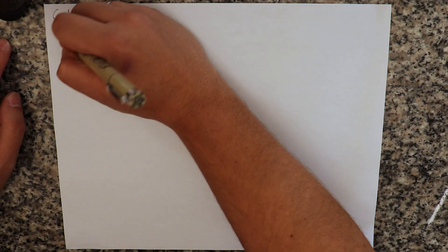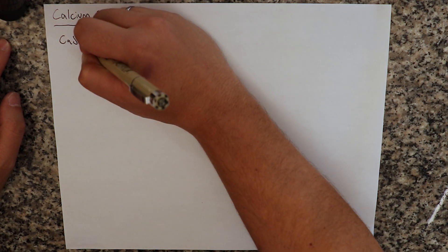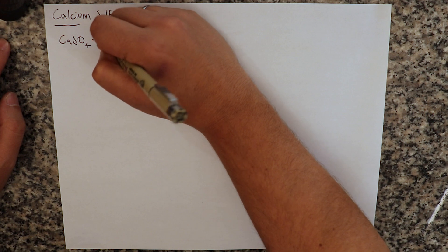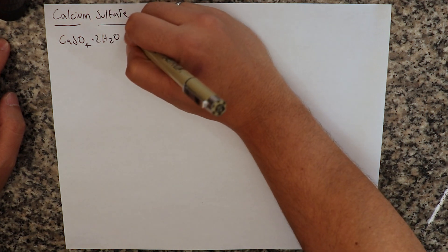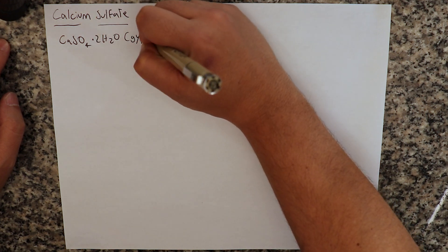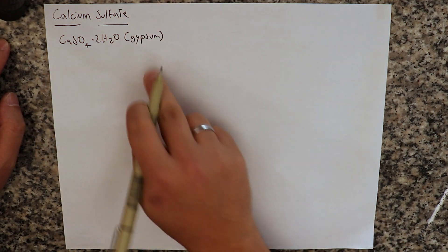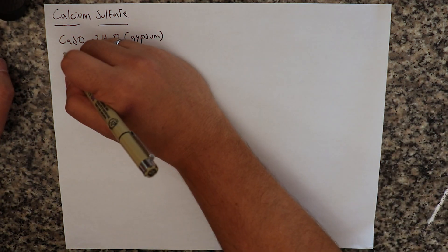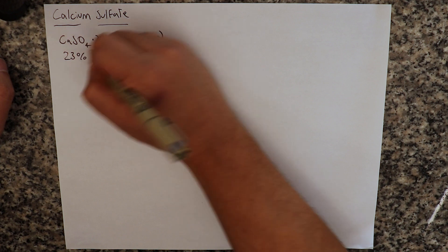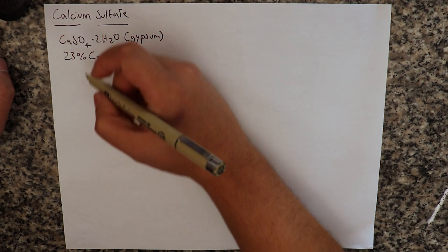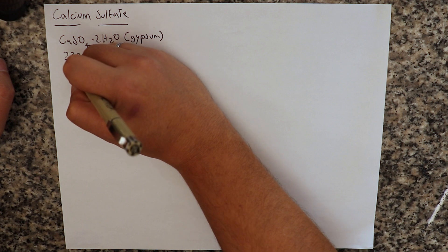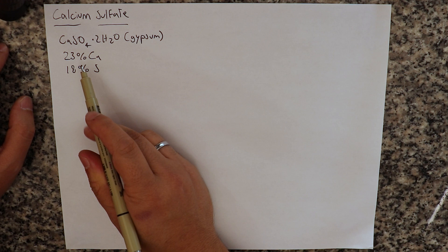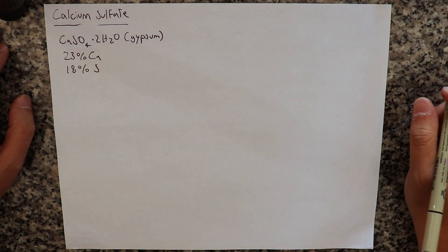So calcium sulfate is what we call CaSO4, and usually it has two waters of hydration and this is what is commonly referred to as gypsum. This particular form of calcium sulfate, which is the most commonly available one, is very calcium rich. It's 23% calcium and it's also pretty sulfur rich, it's 18% sulfur. So with calcium sulfate we can add significant amounts of both calcium and sulfur.